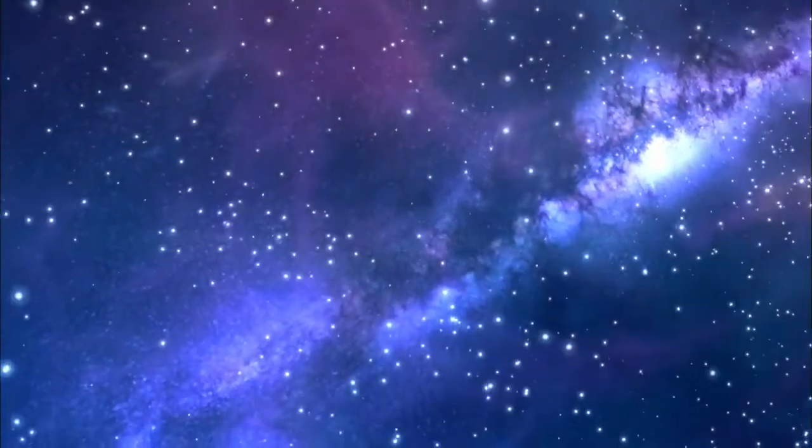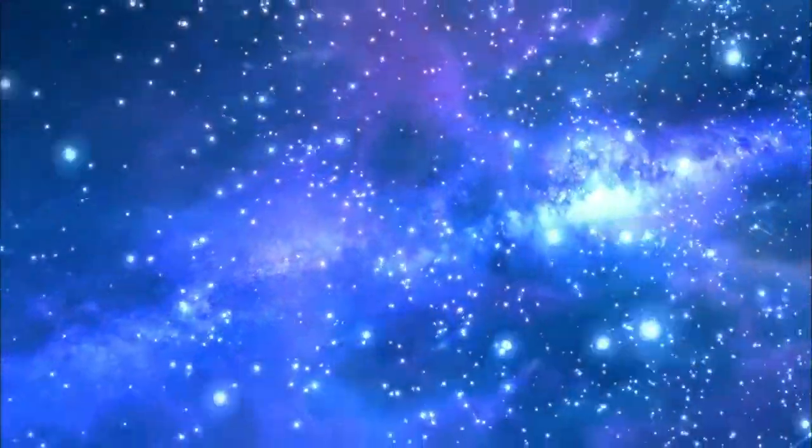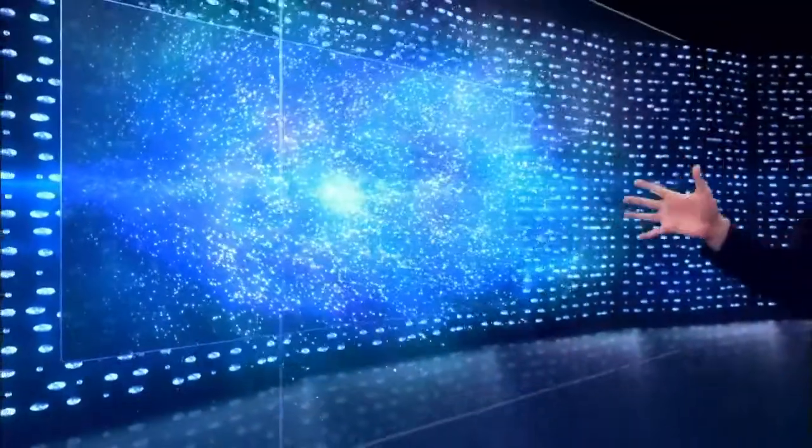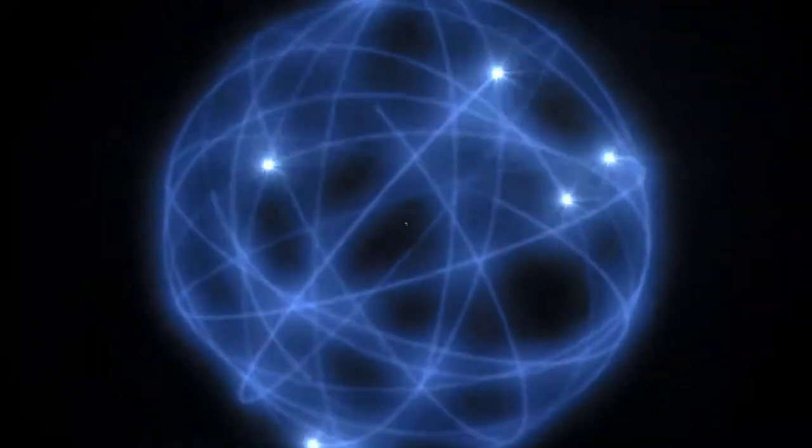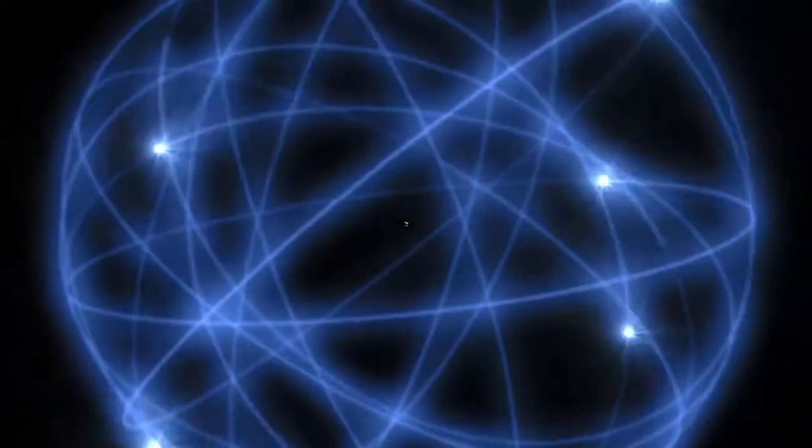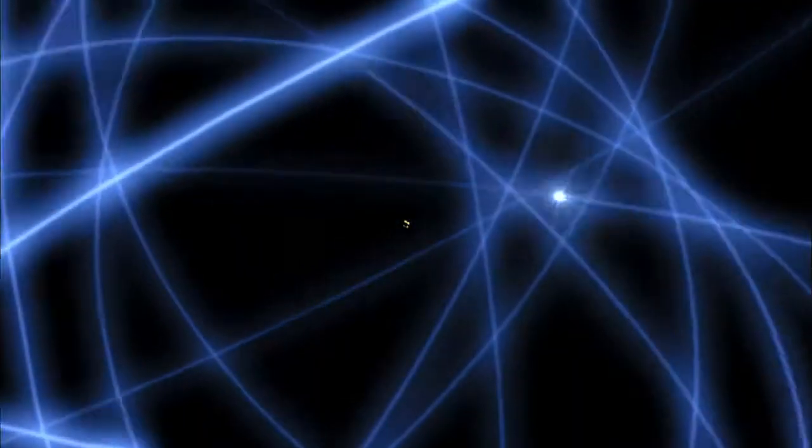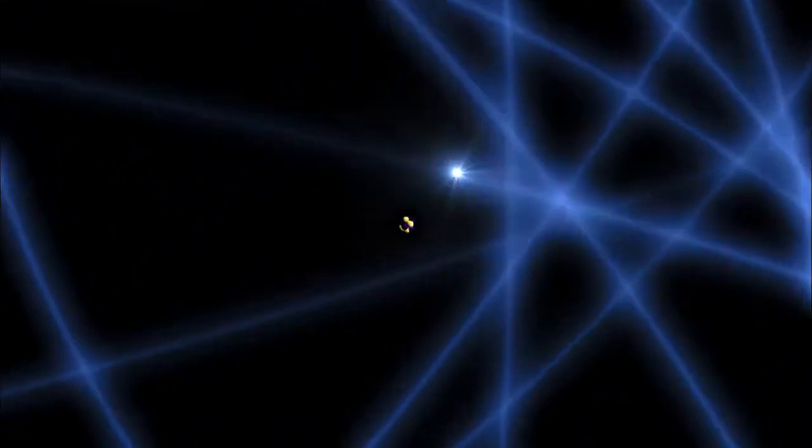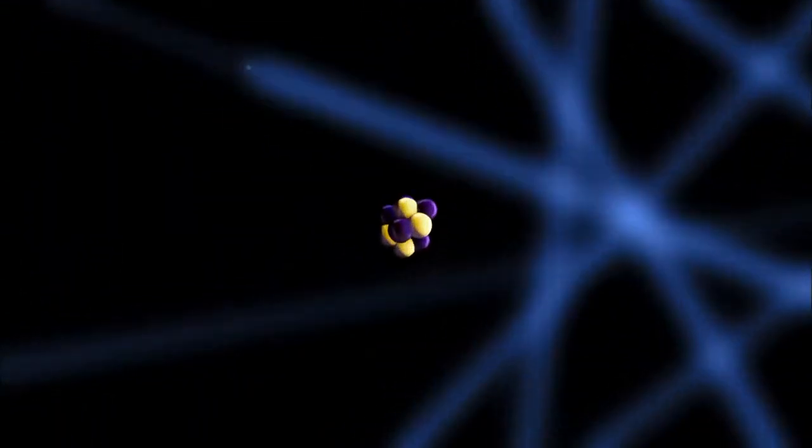When most of us picture space, we think of outer space, a place that's far, far away. But space is actually everywhere. You could say it's the most abundant thing in the universe. Even the tiniest of things, like atoms, the basic ingredient in you and me and everything else we see in the world around us, even they are almost entirely empty space.